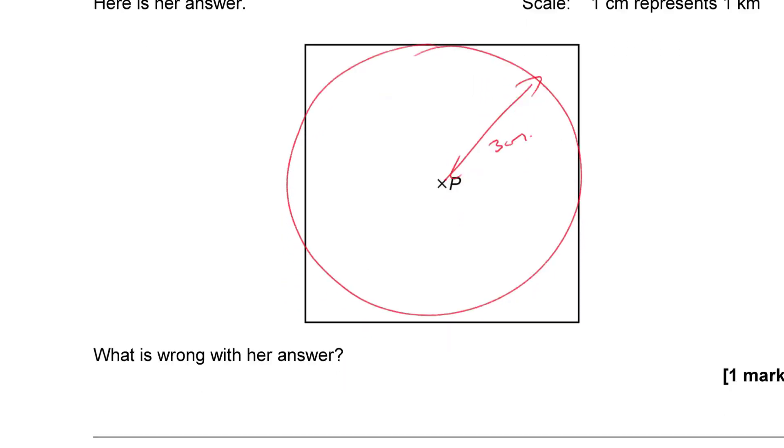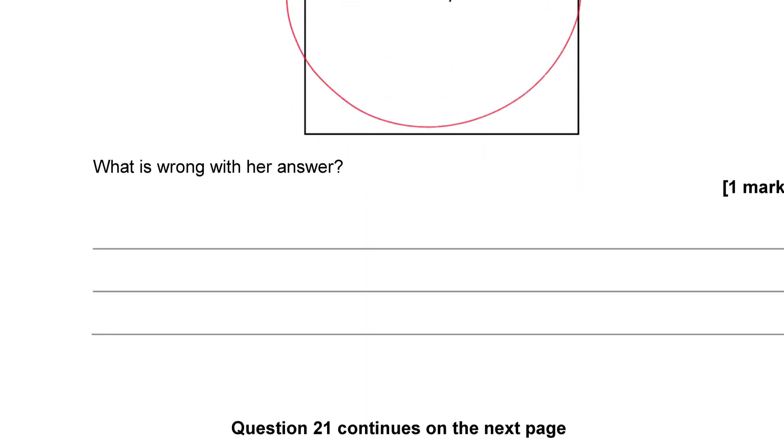So, it's not a square, it should be a circle. So, she should have drawn a circle radius three centimeters from P.